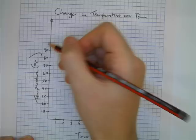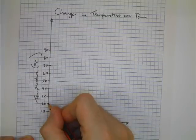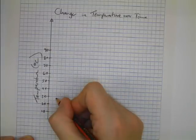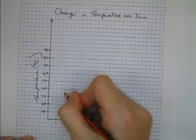Okay, so I can plot the points now. At 0 it was 20 degrees. At 1 it was 28 degrees which is about there. At 2 minutes it was 35. At 3 minutes it was 49 and so on.